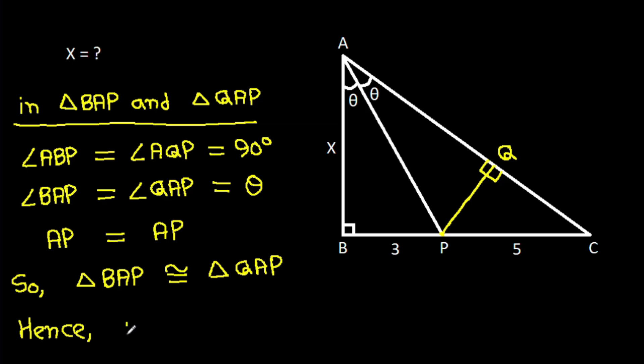Hence, BA will be equal to QA, and BA is X, so QA will also be X. And BP will be equal to QP, and BP is 3, so QP will also be 3.